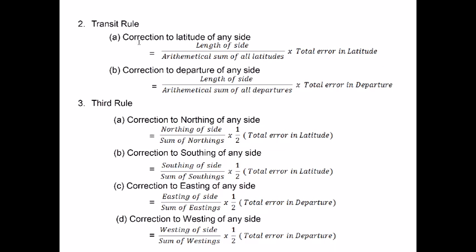The second method is the Transit rule. According to this rule, the correction to latitude of any side equals the length of the side divided by the sum of all latitudes, multiplied by the total error in latitude. Similarly, for departure correction, it is the length of the side divided by the sum of all departures, multiplied by the total error in departure. The third rule, which along with the Bowditch rule is used more commonly, divides latitudes into northing and southing, and departures into easting and westing. The correction to northing is the northing of the side divided by the sum of all northings, multiplied by half the total error in latitude, and similarly for southing and departures.